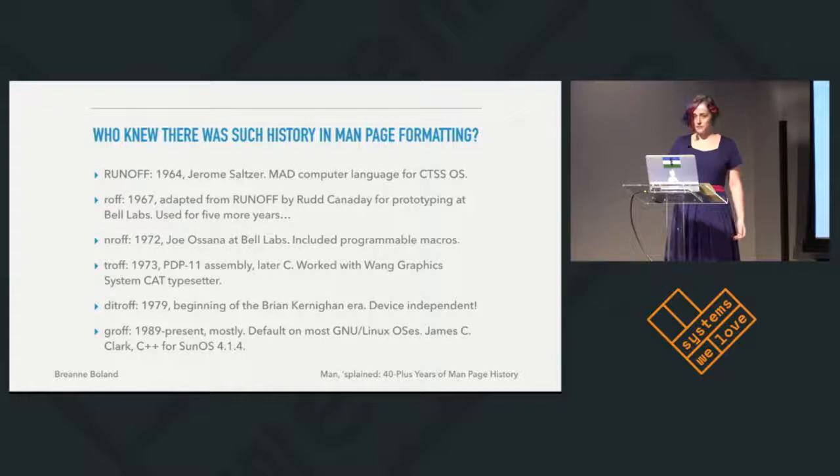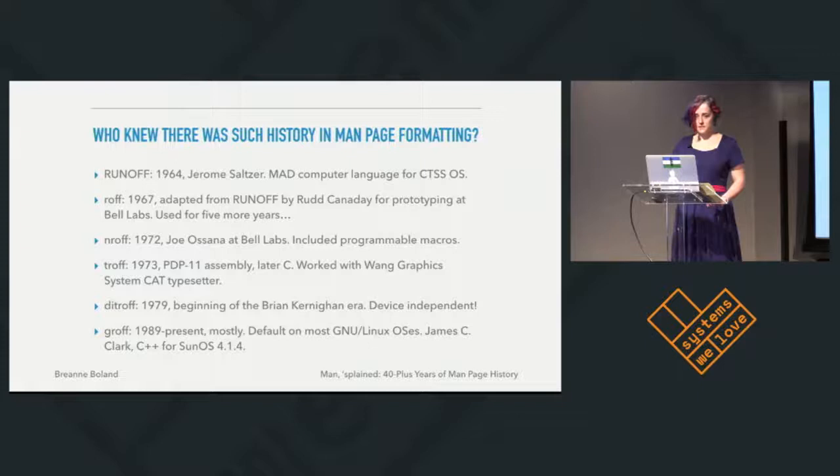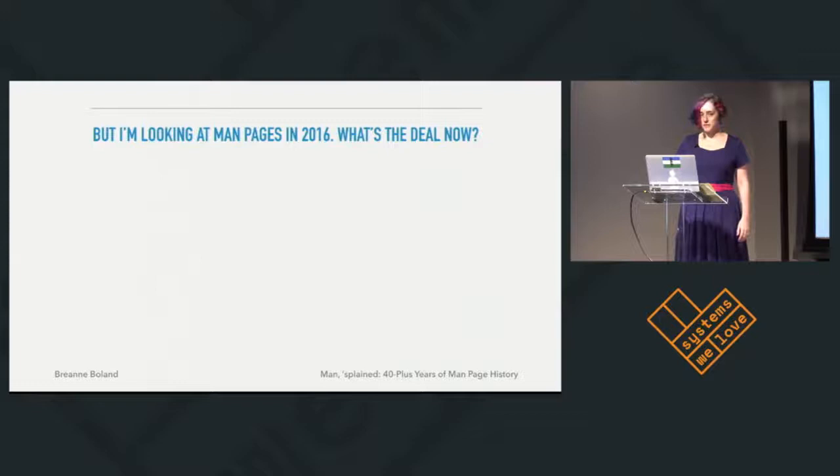The Roff you've most likely interacted with, at least in the last 20 odd years, is G-Roff, which is now the default in most new Linux OSes. This was written by James C. Clark, who was also the technical lead on the working group that created XML. And if you look up a ManPage on a Mac, for instance, this is the utility that formats it.